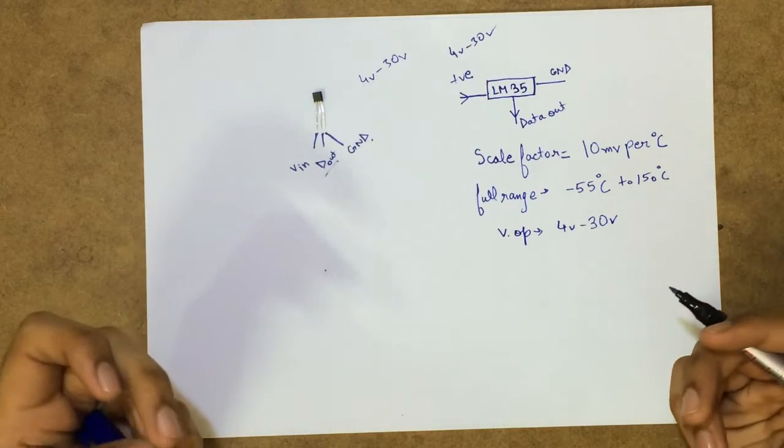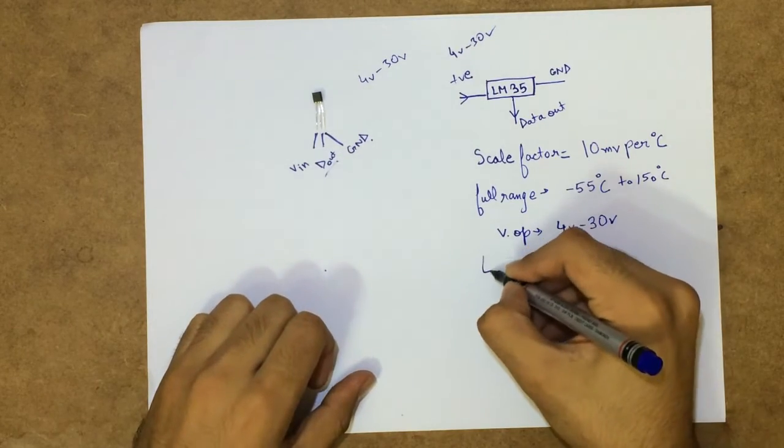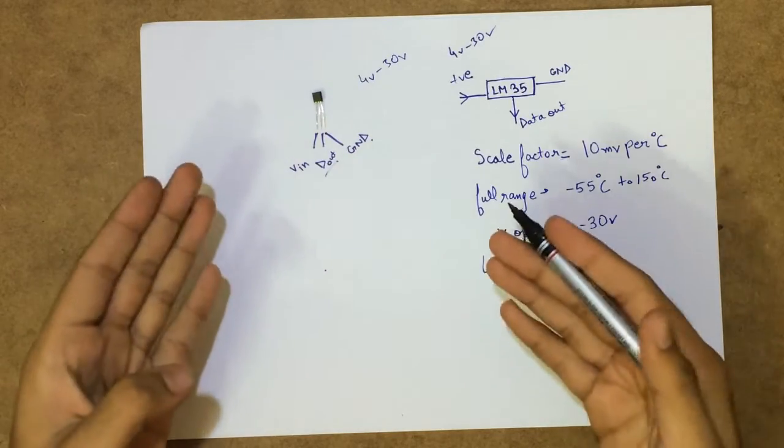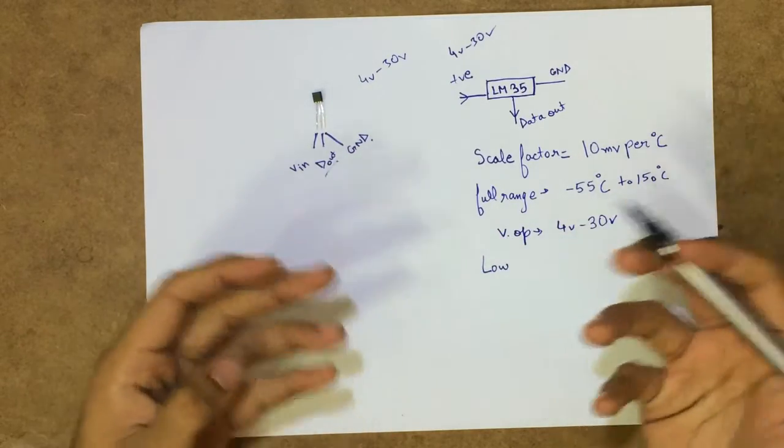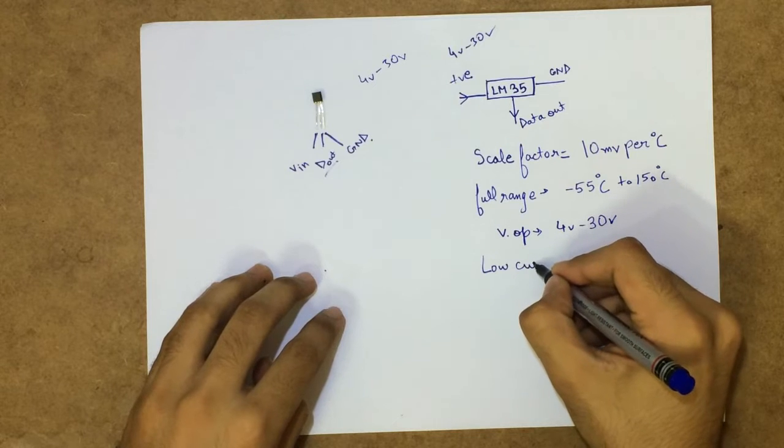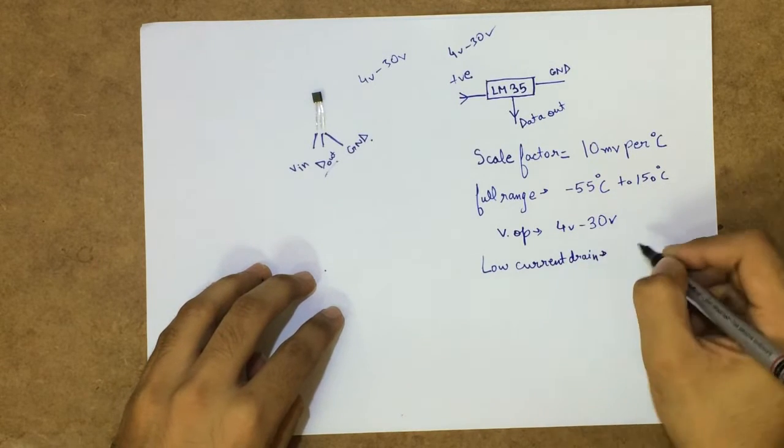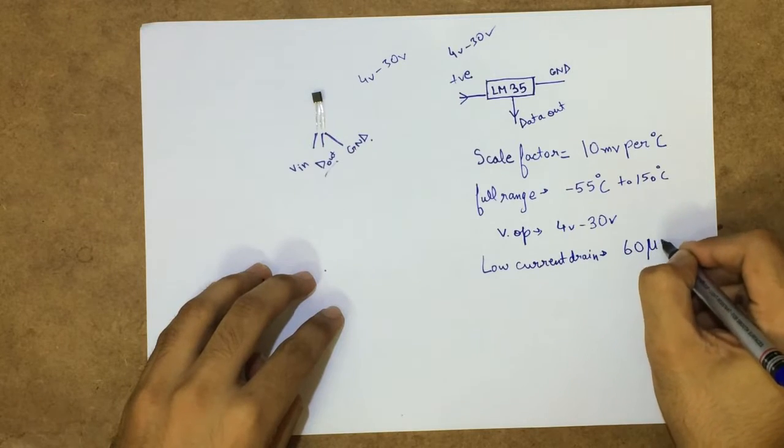And this device is also very popular for the low current drain. That means that you can totally use this device in many low power applications. So the low current drain is 60 micro amperes when it's in use.